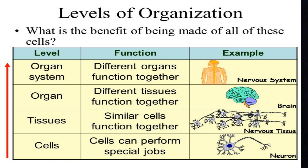What is the advantage of specialization? One cell does a specialized work — for example, a neuron. When many neurons come together in a tissue, so many neurons will be able to pass the message together. Many neurons in the brain form the brain organ, and the brain functioning as an organ system is called the nervous system. This is an example of how one specialized cell combines to form tissue and organs.